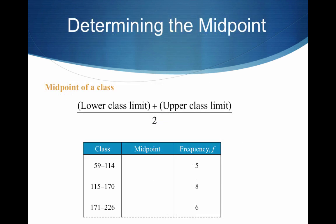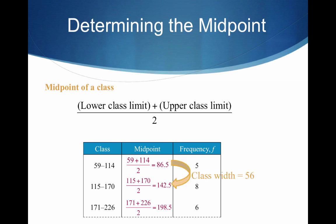What if we want to calculate the midpoint? We simply add the lower class limit and the upper class limit and divide by 2. For our first class, we add 59 and 114 and divide by 2 to get 86.5. We continue for each class, and as a check, the difference between consecutive midpoints should equal the class width of 56 — for example, 142.5 minus 86.5 equals 56.